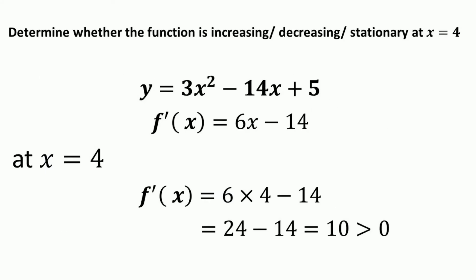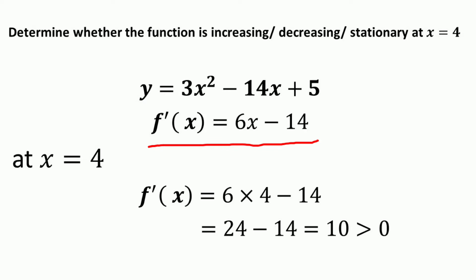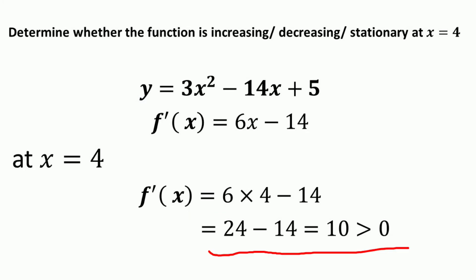Consider some numerical examples to determine whether the function is increasing, decreasing, or stationary at x equal to 4. For example, the function y equals 3x squared minus 14x plus 5. The first derivative f prime of x equals 6x minus 14. Substituting x equal to 4: f prime of 4 equals 6 times 4 minus 14 equals 24 minus 14 equals 10, which is greater than zero. So we can say that the given function is an increasing function at x equal to 4.